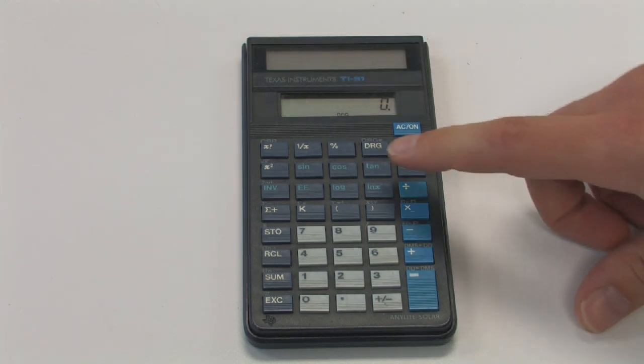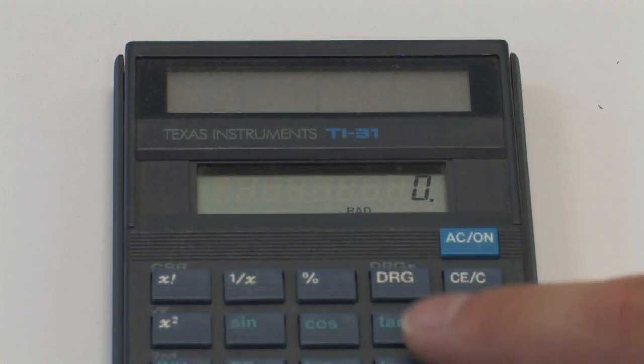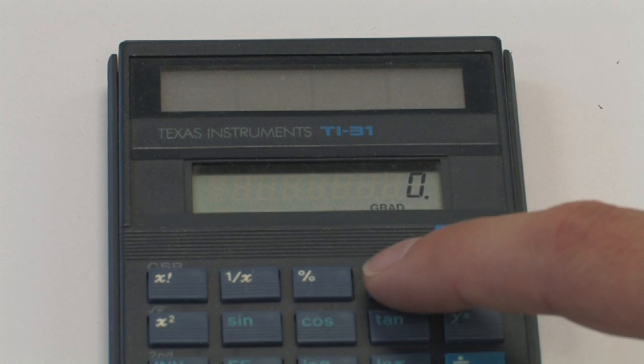To change it, you have the DRG button which changes from degrees to radians, and in this case it goes to gradians.